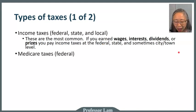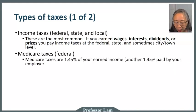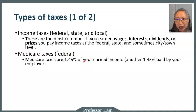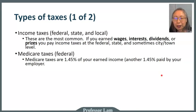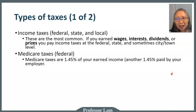The second type of tax is Medicare tax, and this is only at the federal level. The federal Medicare tax is 1.45% for individuals, and the employer also pays 1.45%. The Medicare tax will pay for your Medicare health insurance when you turn 65. We'll talk more about that when we cover health insurance in a later module.